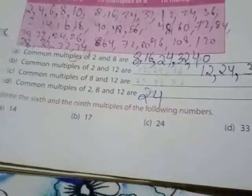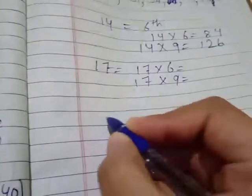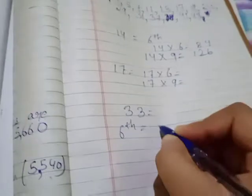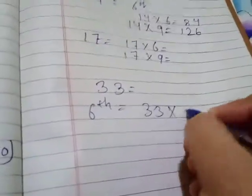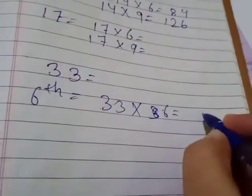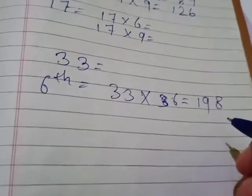Then for 24 and 33 also. 24 you do on your own. 33 I will do and show. 33 sixth will be 33 times 6. 6 threes are 18, again 18 plus 1 is 19, so 198.